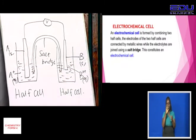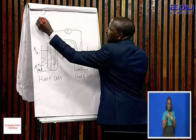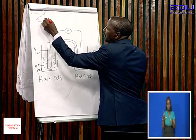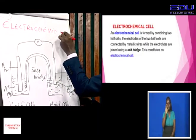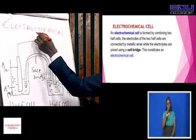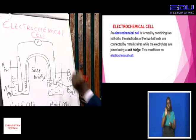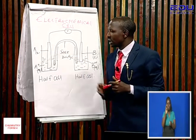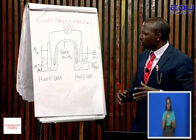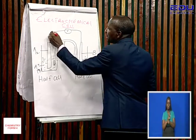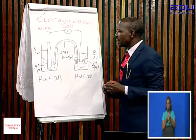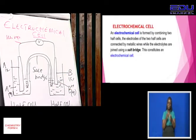That is what you call an electrochemical cell. We have two half cells — that is one of the components. The electrodes in the half cells are connected using a metal wire, and the solutions of the two half cells are joined using a salt bridge. This is what you call an electrochemical cell.